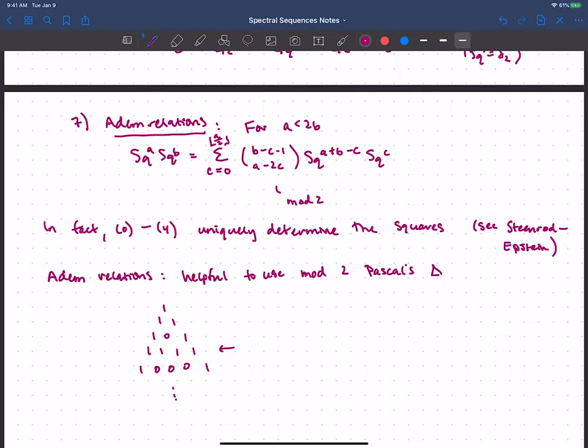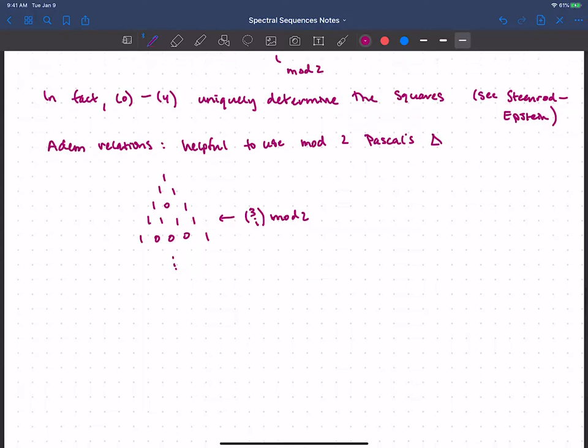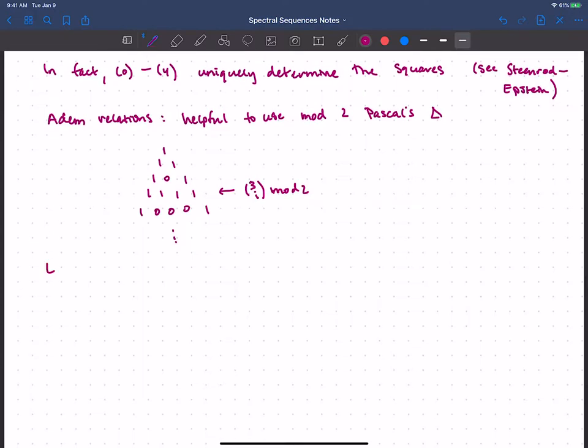So for example, here, this row looks like three choose I mod two, I suppose. So I've got three choose zero on the left and then all the way up to three choose three. And those are all odd. So mod two, that is indeed, I'm always going to get ones there. And then it's a good idea to play with these Adem relations, as I said, also the Cartan formula, though that one's not as bad, I think.